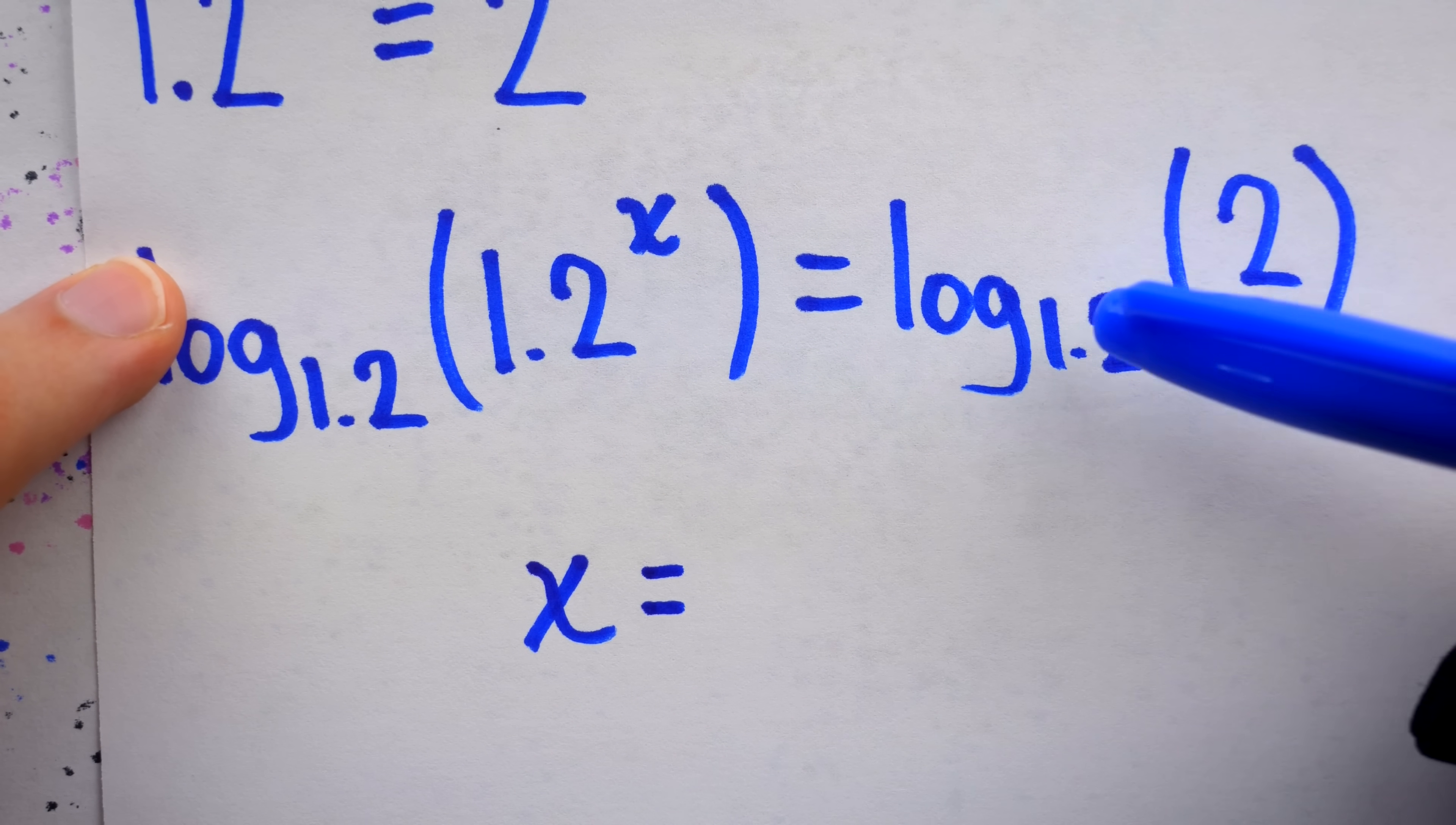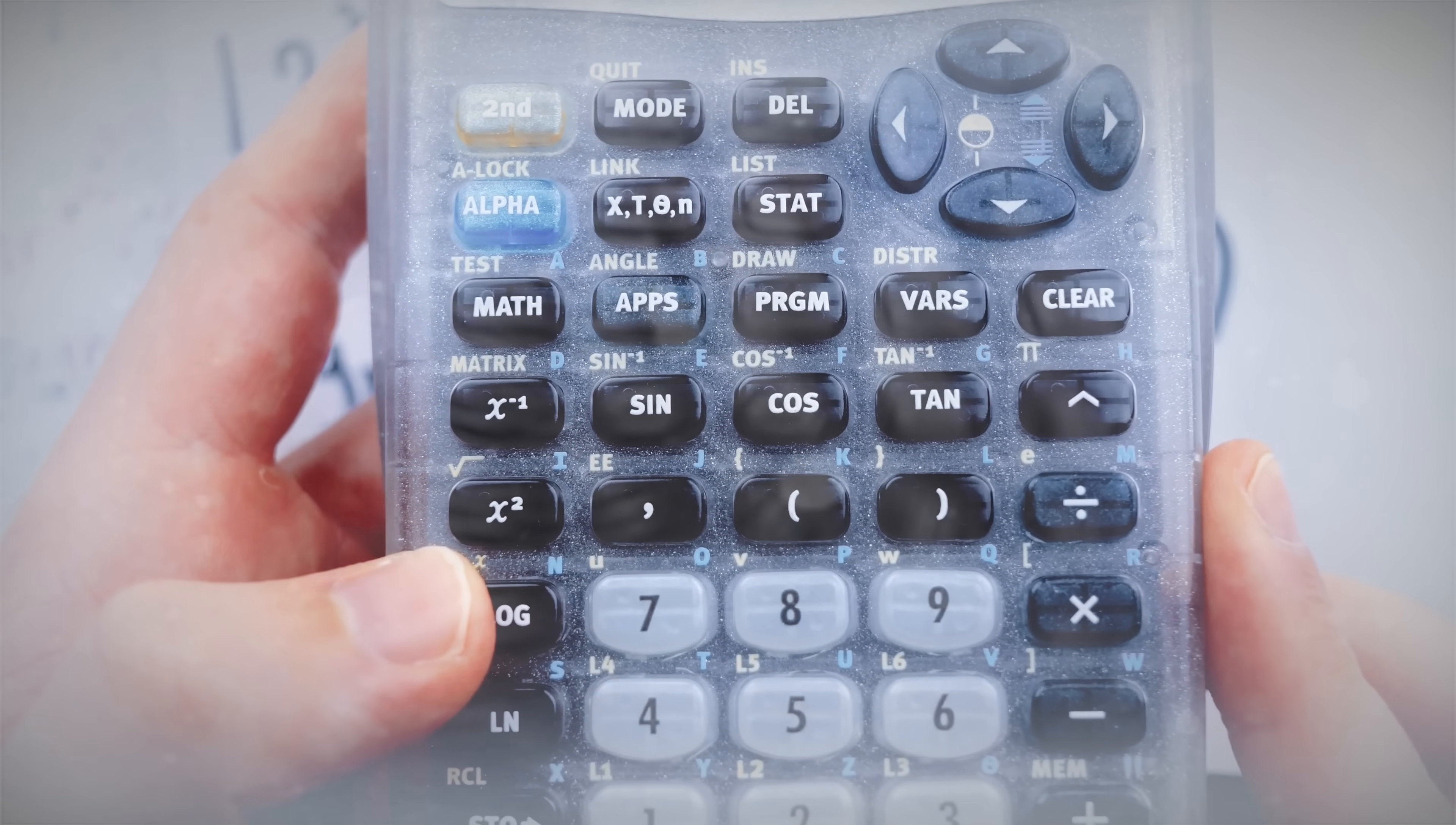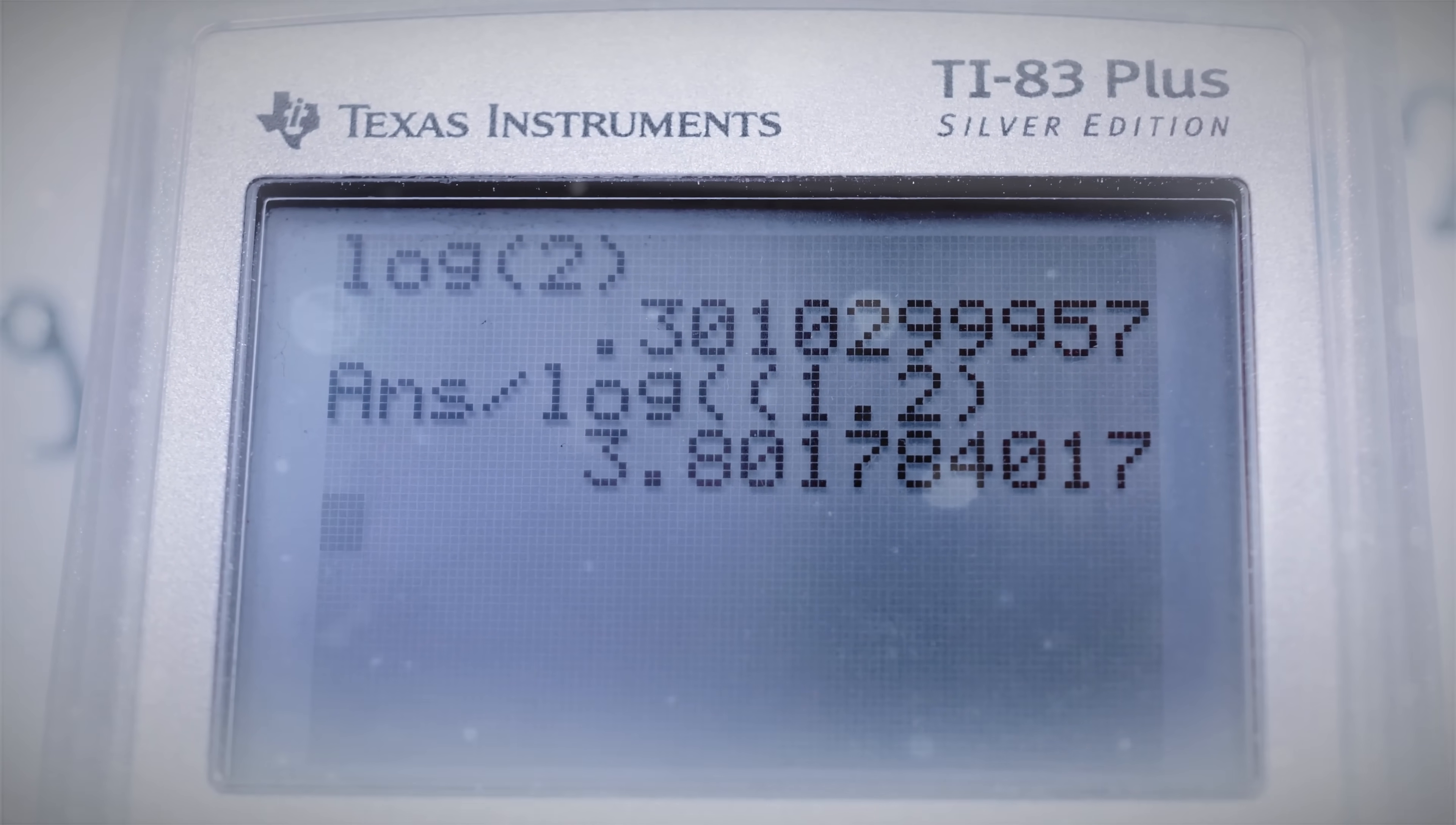However, to figure out what exponent 1.2 needs to produce 2, we'll need a calculator. Most any scientific calculator will do, but I'm going to use my rare, limited TI-83 plus silver edition. The log function on most calculators by default uses base 10. However, we can convert it by dividing our result by the log of the base we desire. So we'll divide this by the log of 1.2. This gives an answer to five decimal places of 3.80178.